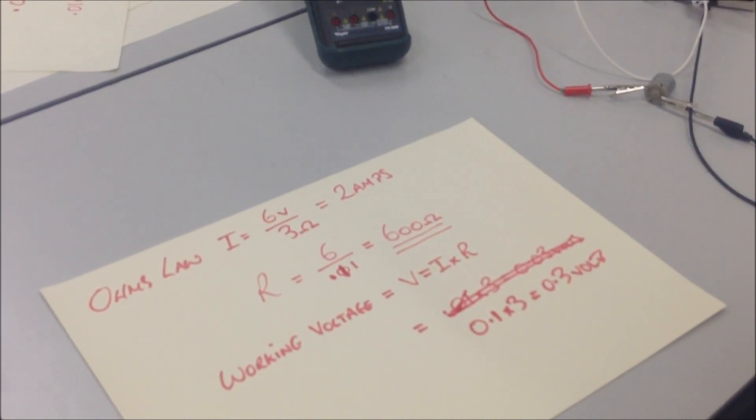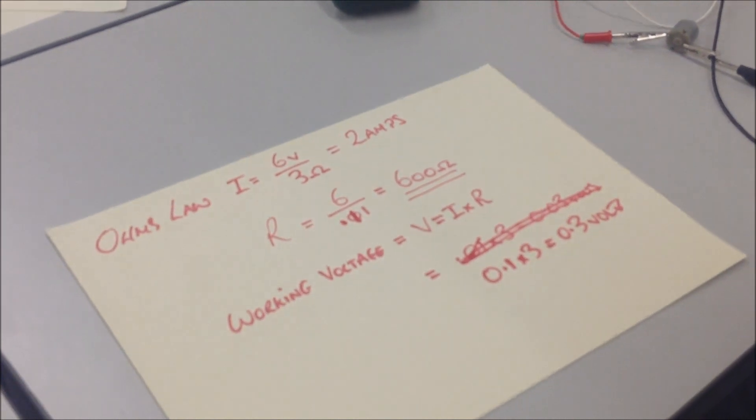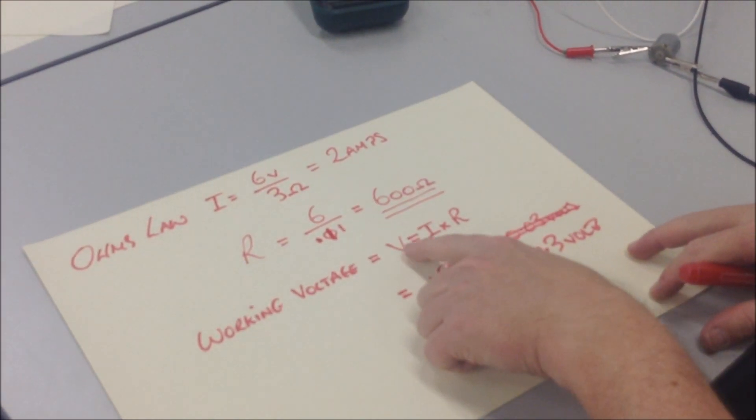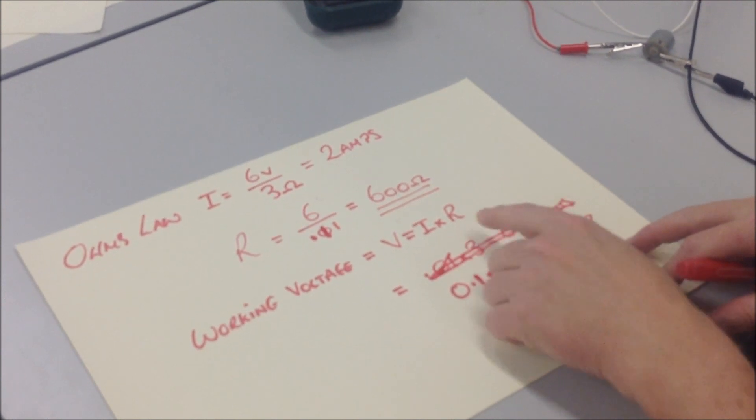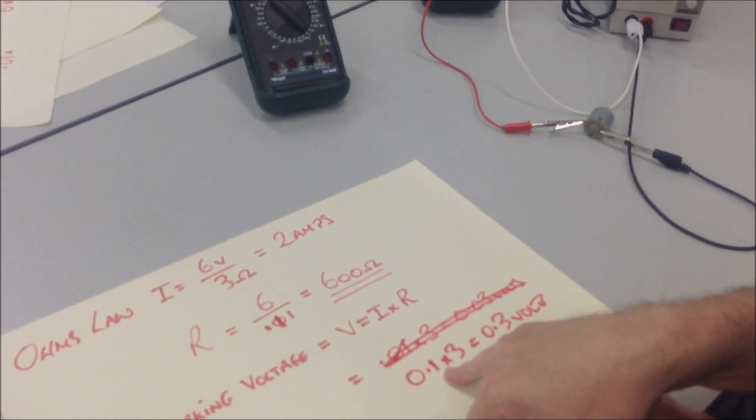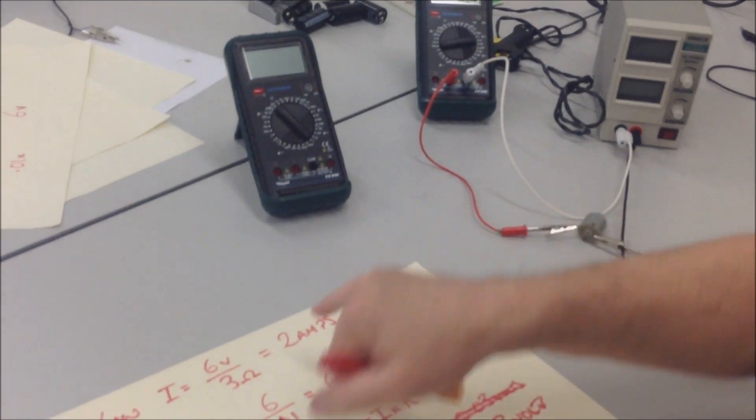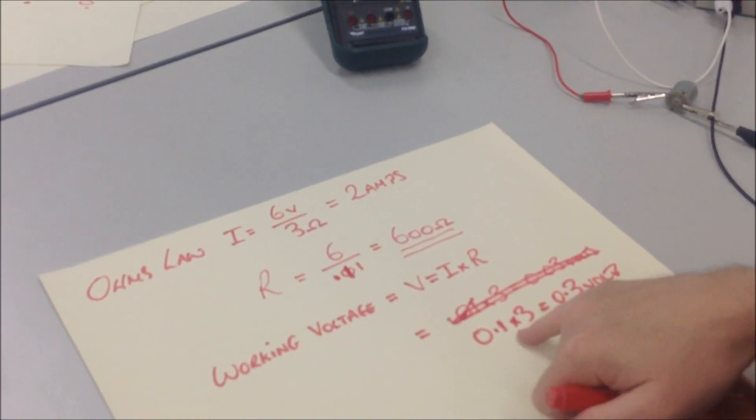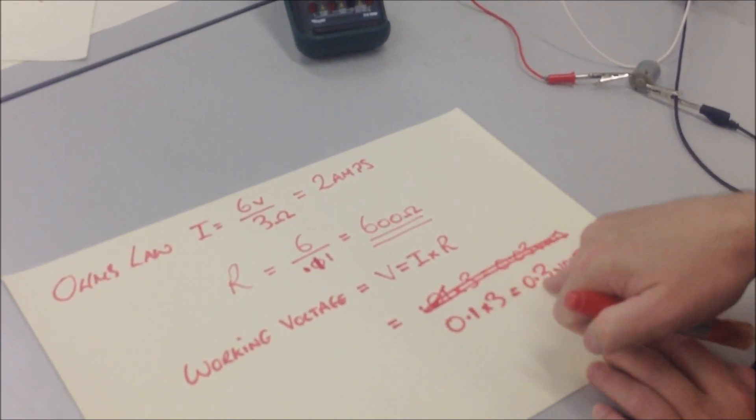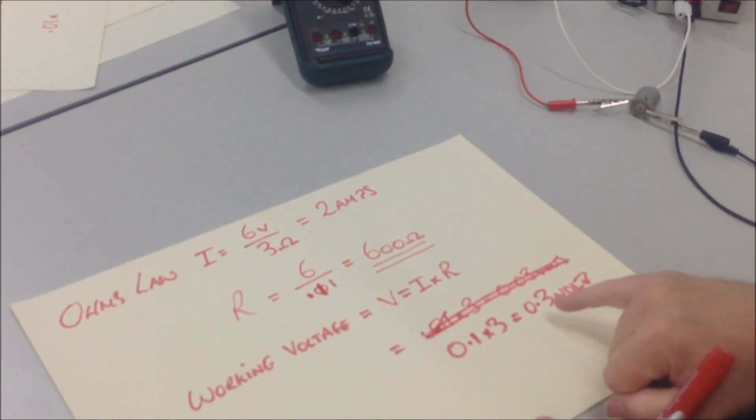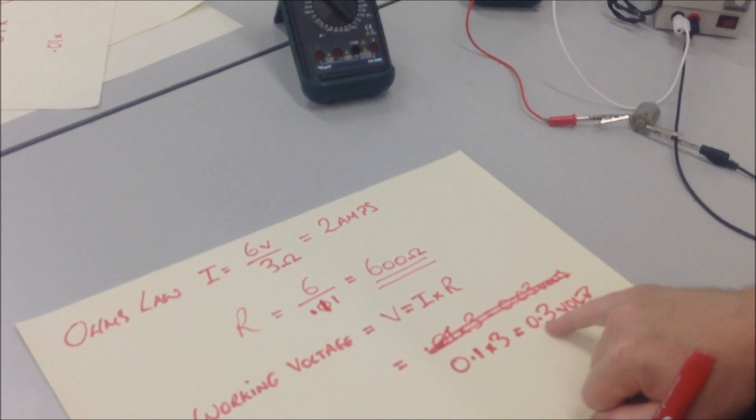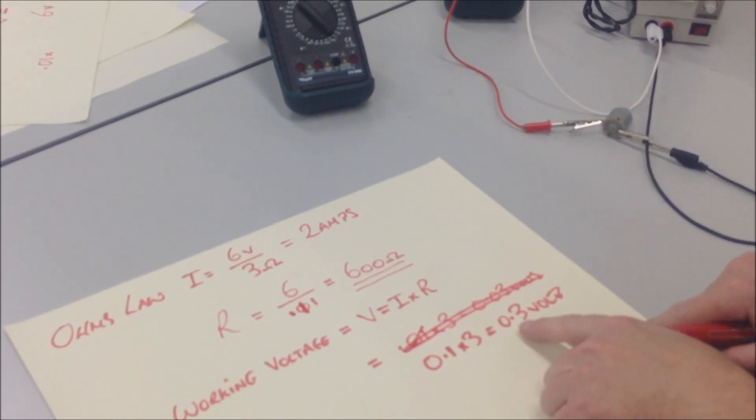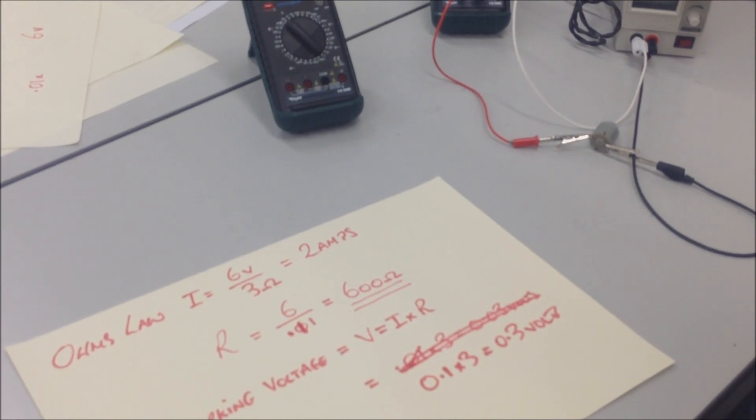Therefore, the working voltage for this motor in this situation, working voltage, V is equal to I times R. We measured the current at 100 milliamps. And we've already measured the resistance of being 3 ohms. Therefore, this motor is only working on a voltage, a positive voltage of 0.3 volts, even though we apply 6 volts to it. We've only got a working voltage of 0.3 volts.